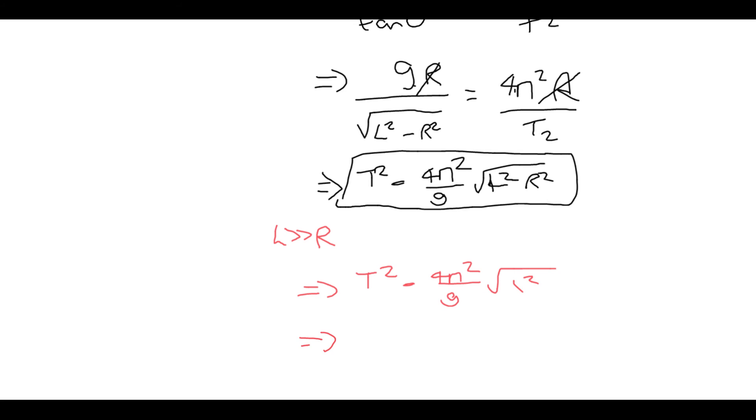And then so obviously what that becomes, we can square root, square root everything, 2 pi l over g.